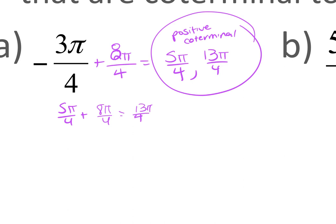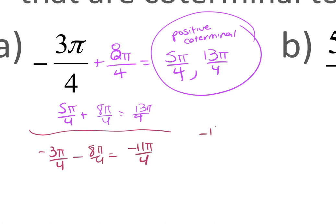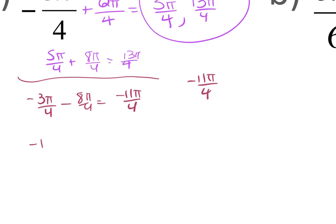For two negative coterminal angles, I subtract 2π, which we already know is 8π/4, to get negative 11π/4. That's the first one. Subtracting 8π/4 again gives negative 19π/4. Those are my two negative coterminal angles.